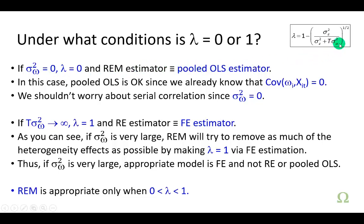And you can see it right here because the variance of omega is zero multiplied by T. The time periods would be zero. And so we're going to be left with the variance of the idiosyncratic term divided by itself, which is one, square root of which is still one, one minus one is zero.